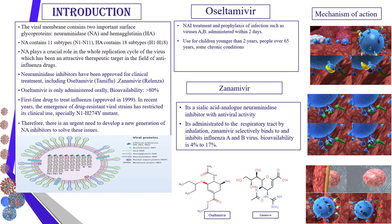Oseltamivir is taken orally with bioavailability of 80%. Recently, oseltamivir has shown some resistance, known as the N1H-274Y mutant. Therefore, there is an urgent need to develop a new generation of neuraminidase inhibitors to solve this issue. Zanamivir is a sialic acid analog considered a neuraminidase inhibitor, administered to the respiratory tract by inhalation, active against influenza A and B, with bioavailability of 4 to 17%.